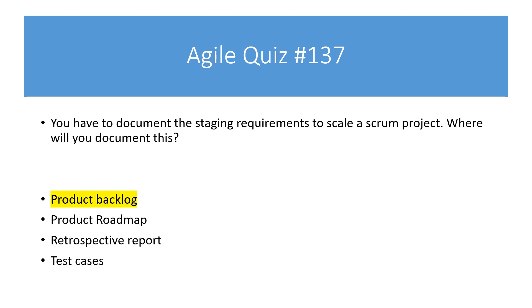The answer is pretty straightforward. There's only one place we can document the requirements in an agile project, which is the product backlog. Product roadmap is used for long-term perspective, retrospectives are for capturing data from the retrospective, and test cases are part of the sprint execution.